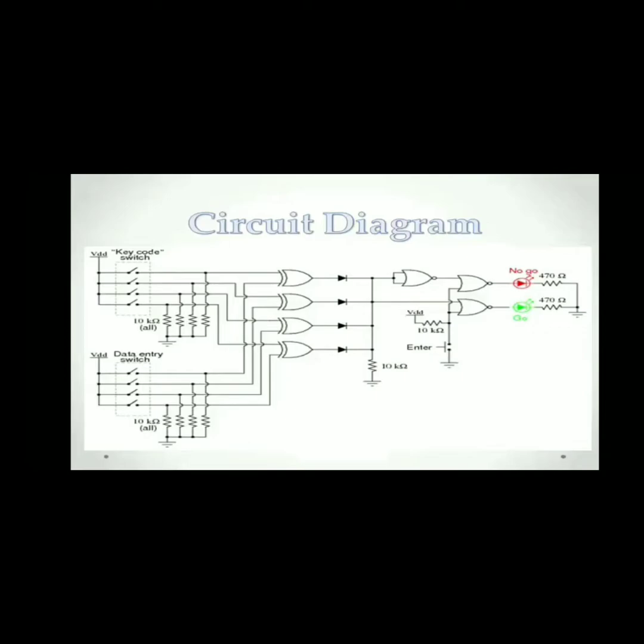We connected every switch with 10 kilo ohm resistor in the circuit diagram. Then we connected the switches with four XOR gates. In each XOR gate, one input comes from key code switch and the other input comes from data entry switches. Then we connected one and four type diodes with each output of XOR gate.